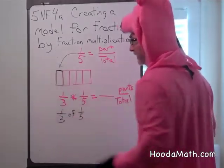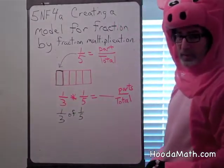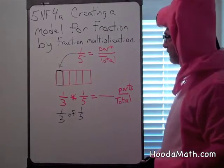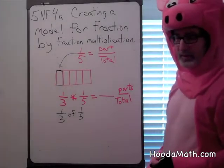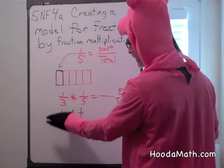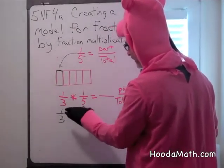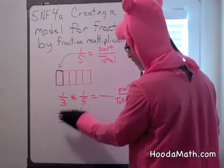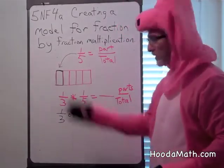This is the black rectangle, 1 out of 5. When we multiply fractions, for instance, 1/3 times 1/5, we're going to get 1/3 out of the total of only the 1/5 part, the black part.